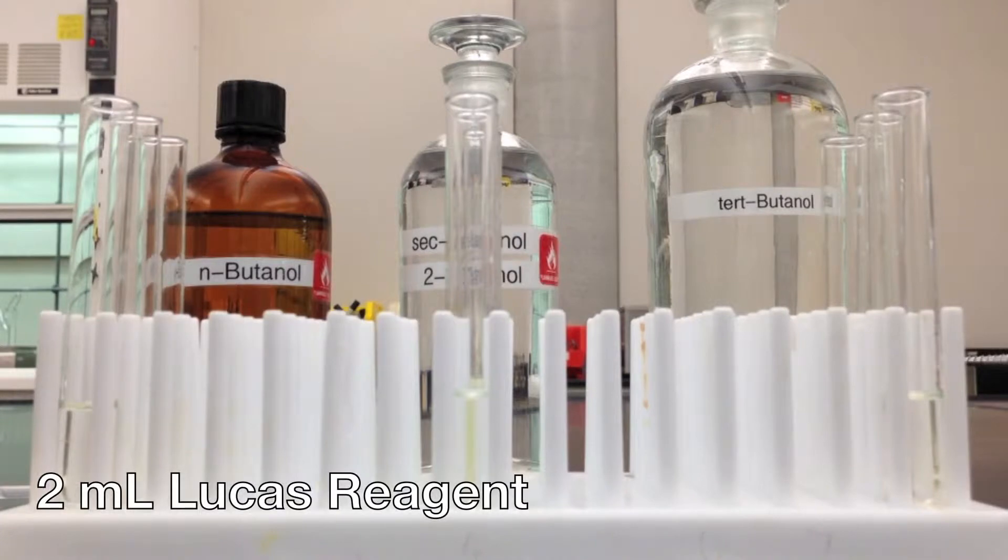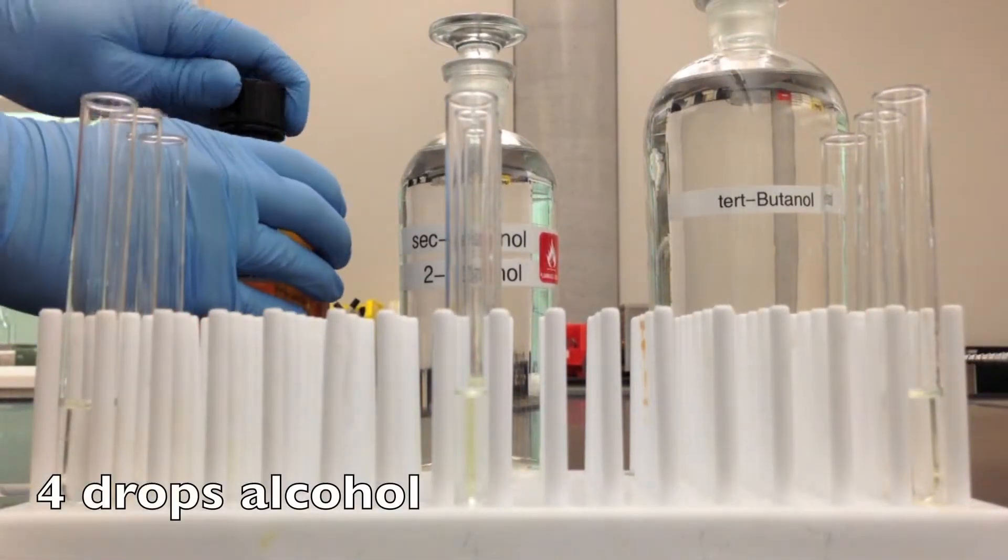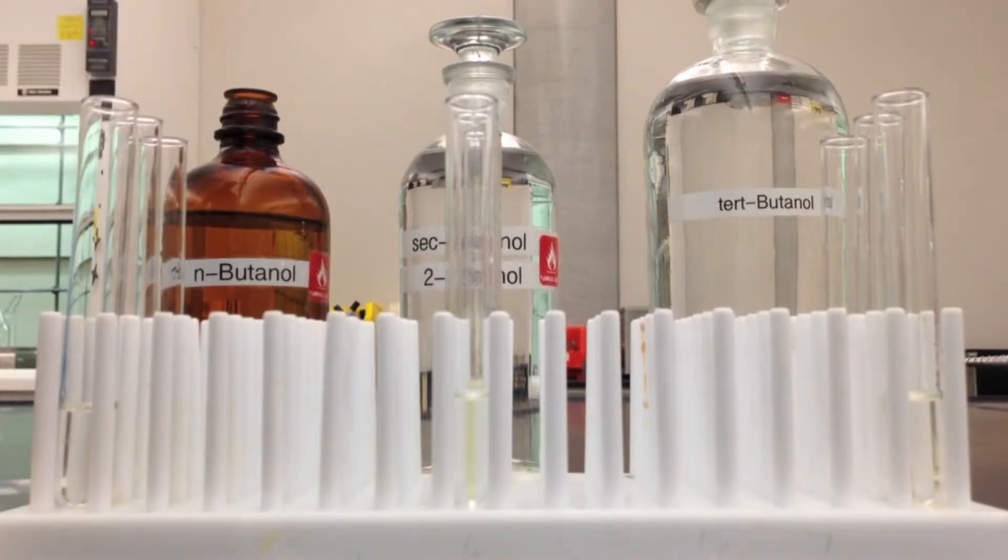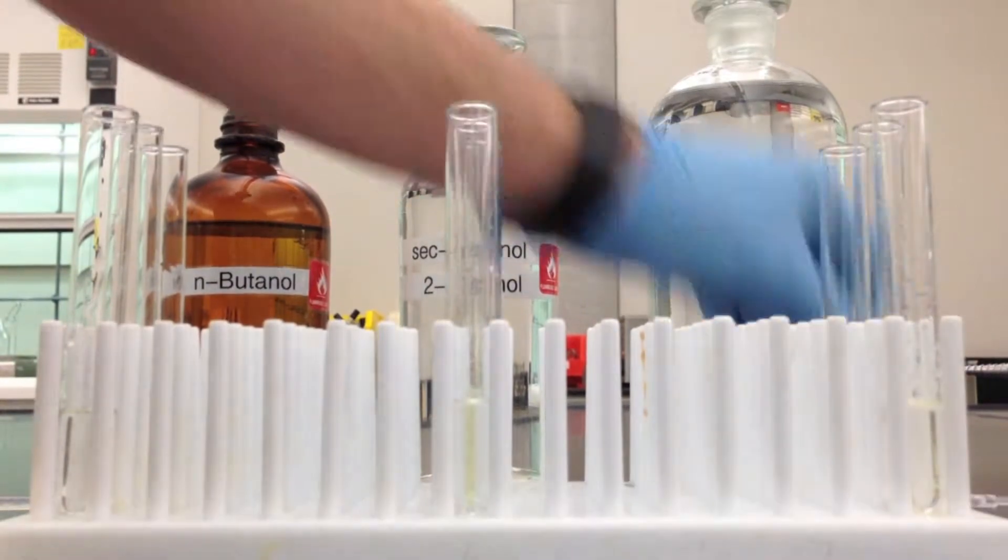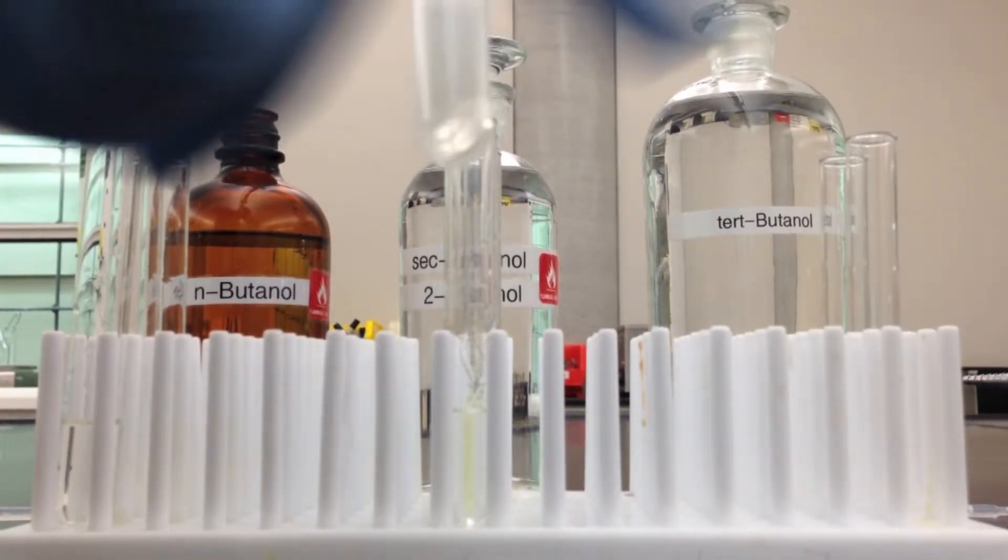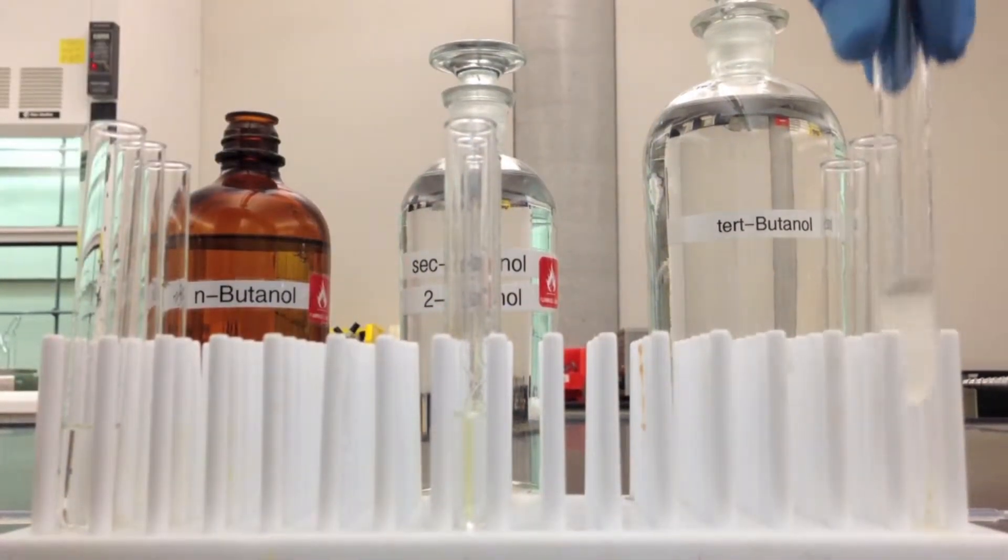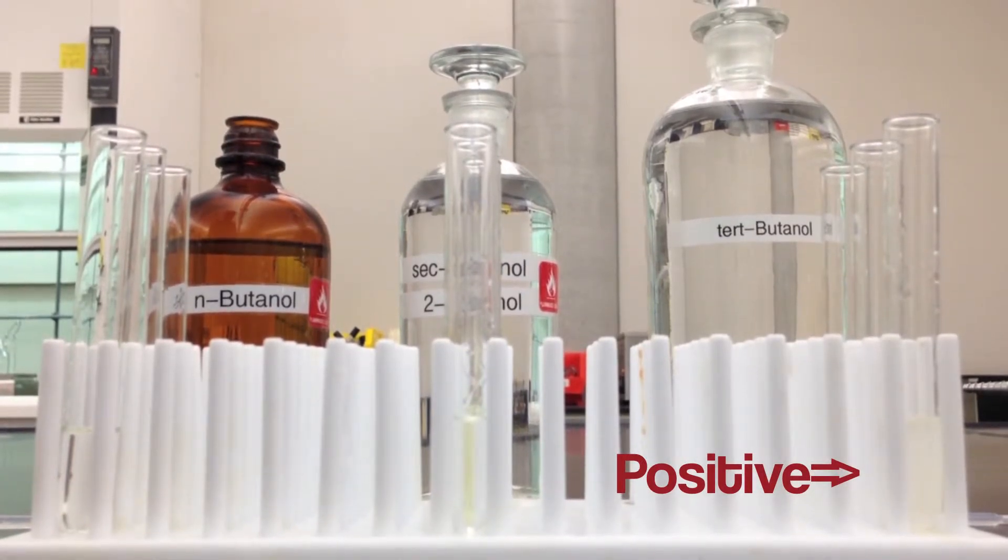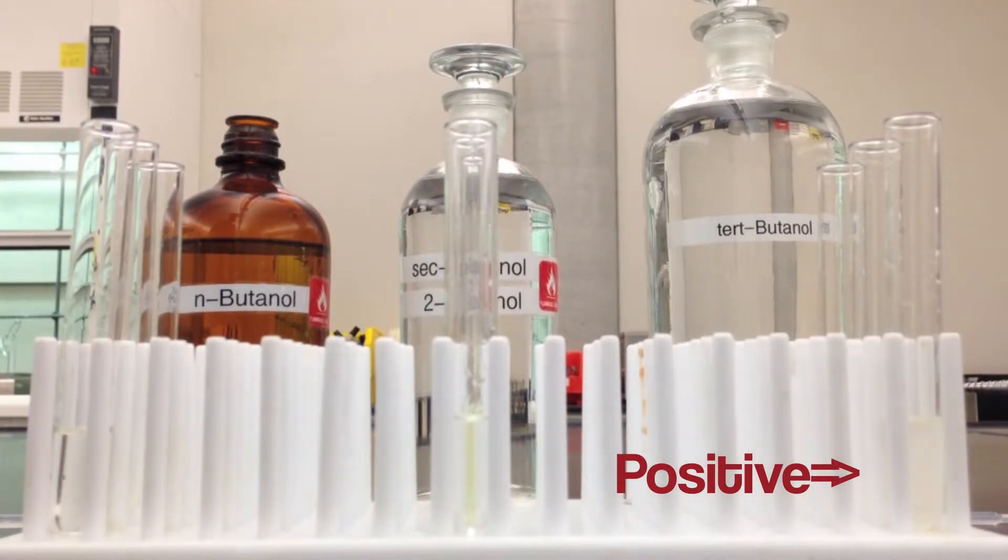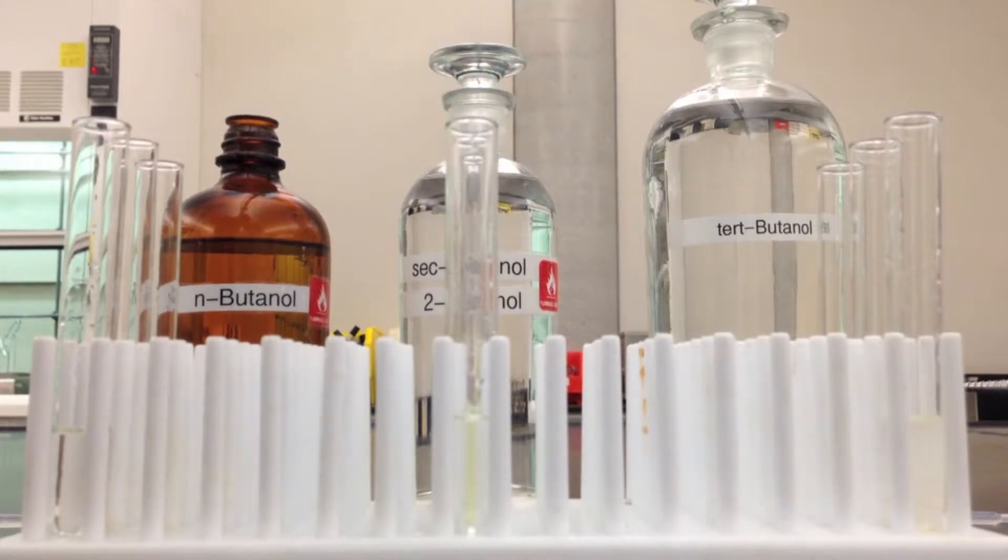So we've already added two milliliters into each test tube. And now we're just going to add roughly four drops of the unknown of each one. So here we have an immediate reaction, which as I said was what a tertiary alcohol would do. And within 15 minutes, if another one of these reacts, then we know that that might be the secondary alcohol.